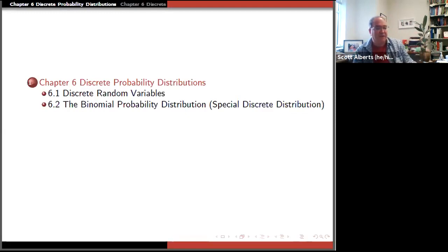In 6.2, which will be a separate video, we'll talk about the binomial distribution, which is a very particular discrete random variable that comes up a lot in real world things.